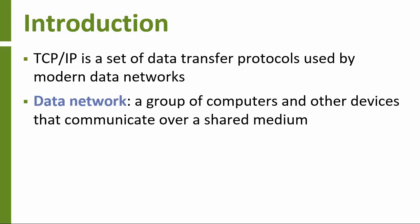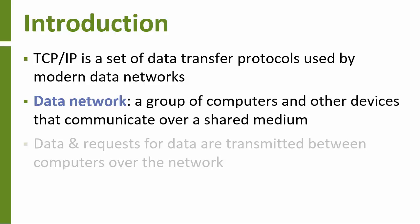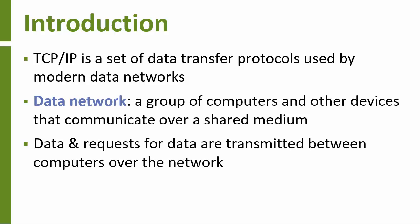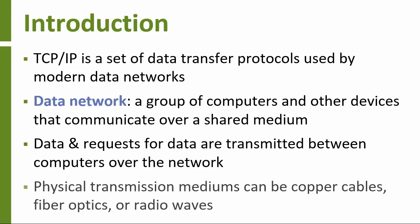A data network is a group of computers, or increasingly these days computer-like devices, that talk to each other over a shared connection. Data and requests for data from a computer pass through the network to another computer. These requests might be transmitted over copper network cables, fiber optics, or radio waves.